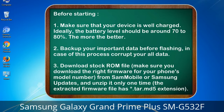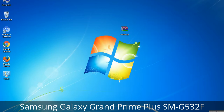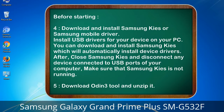3. Download the stock ROM file. Make sure you download the right firmware for your phone's model number from Sammobile or Samsung updates, and unzip it only one time. The extracted firmware file has a *.tar.md5 extension. 4. Download and install Samsung KIES or Samsung mobile driver to install USB drivers for your device on your PC.